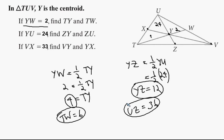So VX is 33, and this time we're given the whole median. The whole median is 33, and we want to find VY and YX. So VY, we'll just take the first one, take them as they come.